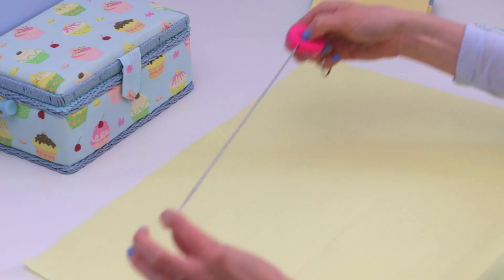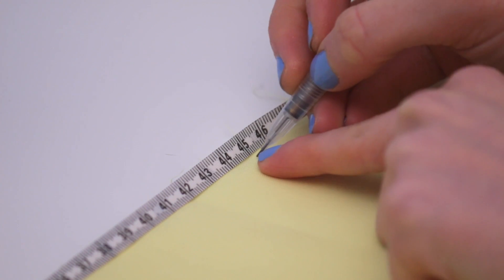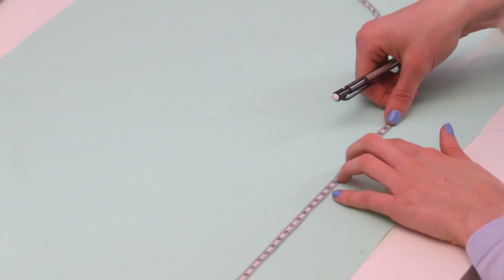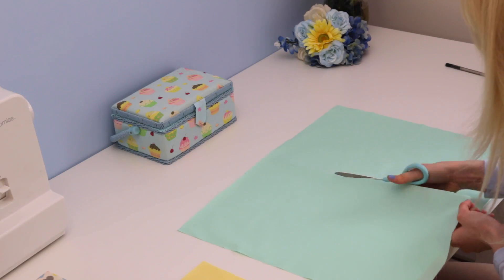To start out, I'm going to measure my yellow fabric to be 45 centimeters across by 30 centimeters. Then cut the fabric, and I'm going to do the same to the green fabric, so 45 centimeters across by 30 centimeters.